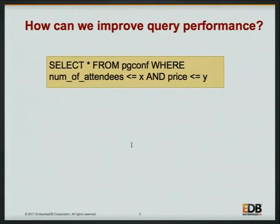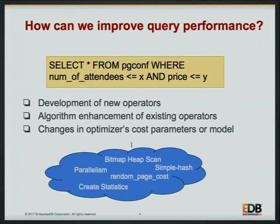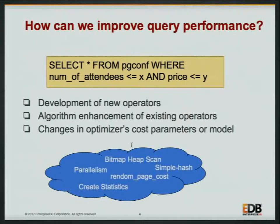The most basic question everybody wants to know: how do you improve query performance? Given a query, what are the choices to improve performance? One option is development of new operators — like the parallel query operators discussed yesterday by Robert, such as parallel index, parallel sequence scan, and parallel bitmap. Another option is to enhance the algorithm of existing operators, like improvements to sorting. Or you can change the optimizer cost parameter or the cost model completely.